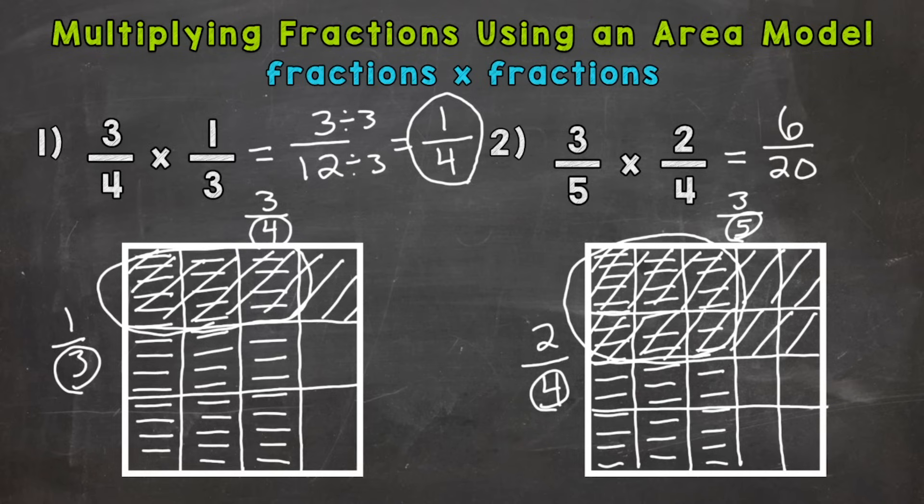Let's check to see if we can simplify. Six and 20 have a common factor of two. So let's break this down. And we get three-tenths. So there is our area model to represent the problem three-fifths times two-fourths.